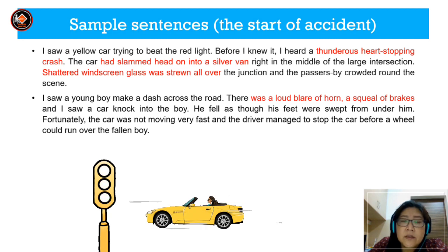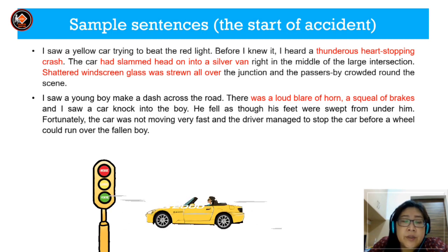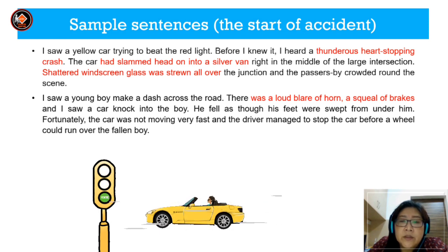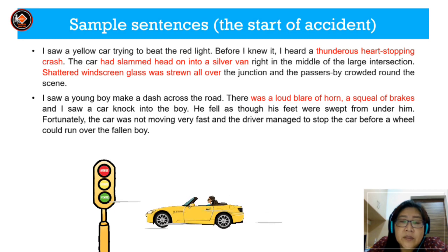Here are some sample sentences to describe the introduction or the start of the accident. You can write: I saw a yellow car trying to beat the red light. Before I knew it, I heard a thunderous, heart-stopping crash. The car had slammed head-on into a silver van right in the middle of the large intersection. Shattered windscreen glass was thrown all over the junction and passersby crowded around the scene. I saw a young boy make a dash across the road. There was a loud blare of horn, a squeal of brakes, and I saw a car knock into the boy. He fell as though his legs were swept from under him. Fortunately, the car was not moving very fast and the driver managed to stop before a wheel could run over the fallen boy.